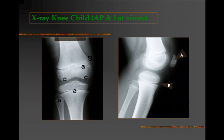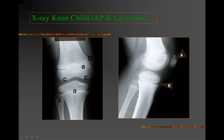Let us now look at an x-ray of the knee in a child, with an AP view on the left and a lateral view on the right. One notes the medial and lateral condyles of the femur with the epiphyseal line or growth plate which is not fused. The tibial plateau with medial and lateral tibial condyles is visible, again with a visible growth plate. There is also the head, neck, and shaft of the fibula and shaft of the tibia. In the lateral view, the patella or kneecap, femoral condyles, tibial condyles, and fibula are clearly seen.